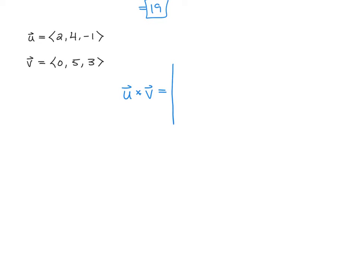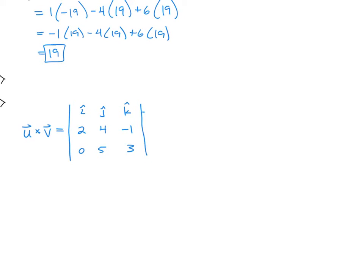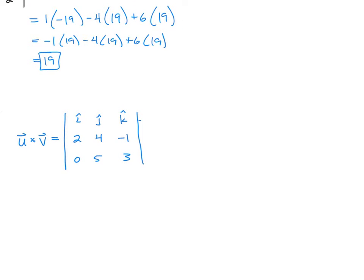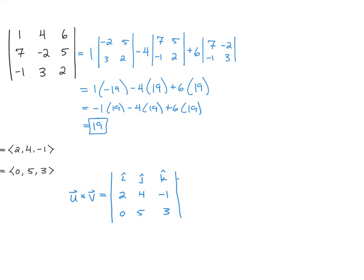We always set up a third order determinant, where u is going to be the middle row, v is going to be the bottom row. So 2, 4, negative 1, 0, 5, 3. The top row are our unit vectors, i, j, k.